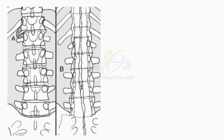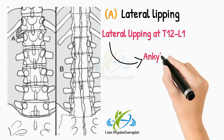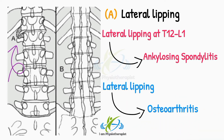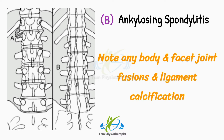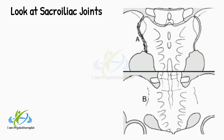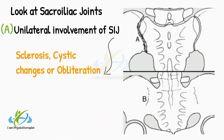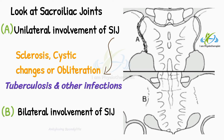Look for lateral lipping as shown in point A. Lateral lipping at T1 to L1 may be an early sign of ankylosing spondylitis, but there and elsewhere it usually indicates osteoarthritis. Picture B is the diagnosis of ankylosing spondylitis — note any bony and facet joint fusions and ligament calcification. Look at the sacroiliac joints. Point A shows unilateral involvement with sclerosis, cystic changes or obliteration, which may occur in tuberculosis and other infections. Bilateral involvement, as shown in point B, is common in ankylosing spondylitis.